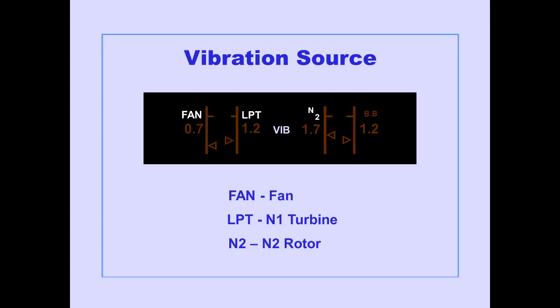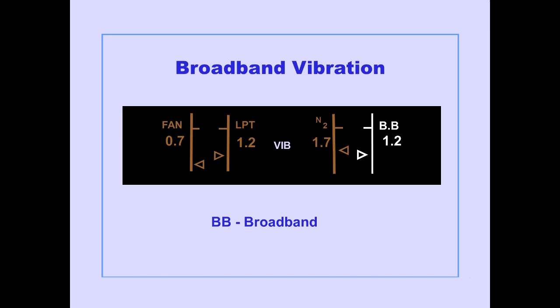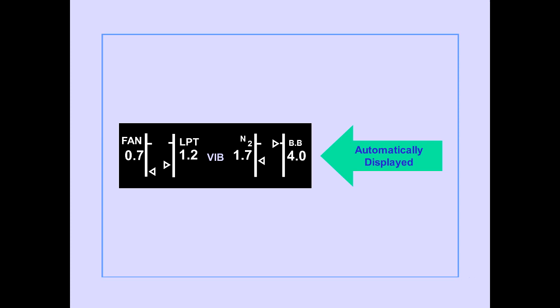A vibration source enunciator is displayed above each digital indicator, indicating whether fan, N1 turbine, or N2 rotor vibration is being displayed. The source with the higher level is automatically displayed. If the vibration system detects a fault and cannot determine fan, N1 turbine, or N2 rotor vibration, the indication for the affected engine displays broadband vibration, which is the engine's average vibration level. A display indicator is shown as a white line on the vibration indication; if a vibration level reaches the display indicator, all vibration indications are automatically displayed.